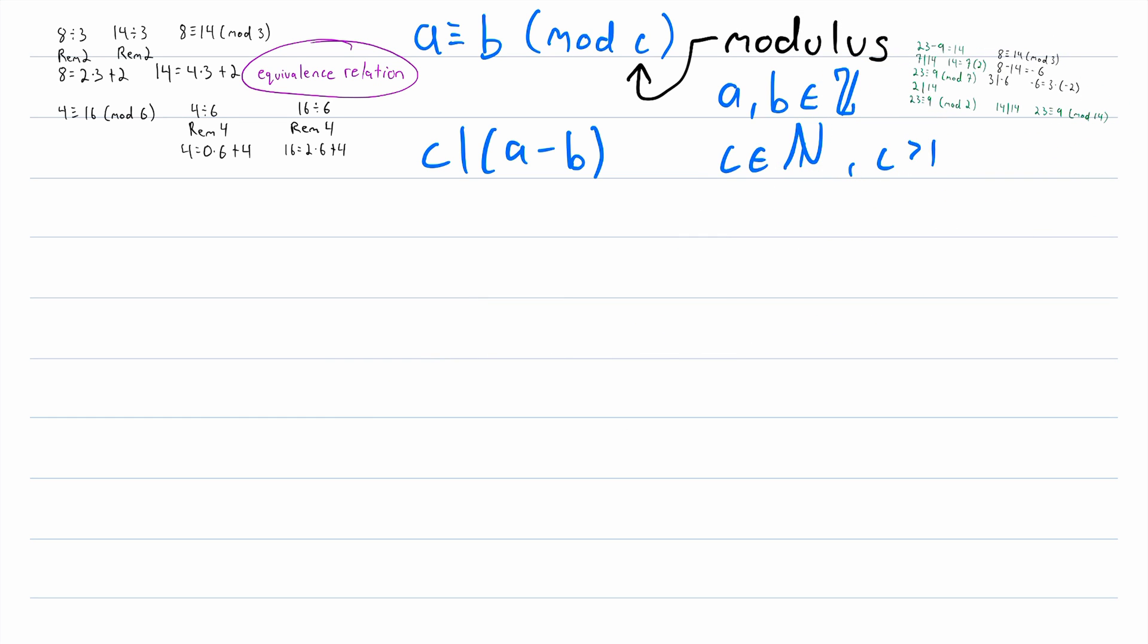I think we should briefly touch on modular congruence with negative numbers before we go, so here is an example of that. Negative 14 is congruent to 2 mod 4, because negative 14 minus 2 is equal to negative 16, and 4 does divide negative 16, because negative 16 is equal to 4 multiplied by negative 4. But what if we were using the other definition that involves remainders? How would we be able to conclude that negative 14 is congruent to 2 mod 4 using that definition?